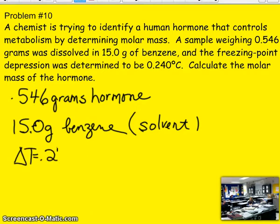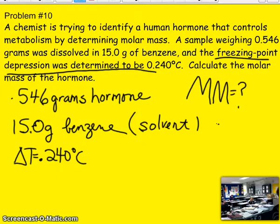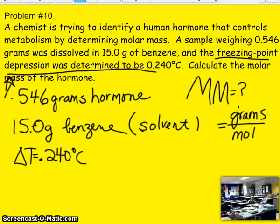And so benzene, this is different, because benzene is our solvent, not water here. We're dissolving the hormone in benzene. And the freezing point depression was determined to be 0.240. So this time, they're actually giving us the delta T. The freezing point depression is your delta T. We don't know the freezing point of the solvent. They didn't give us the freezing point of the solution, which normally we would subtract those to get delta T. They're simply just giving us the delta T. So the delta T is 0.240 degrees Celsius. And they want the molar mass.